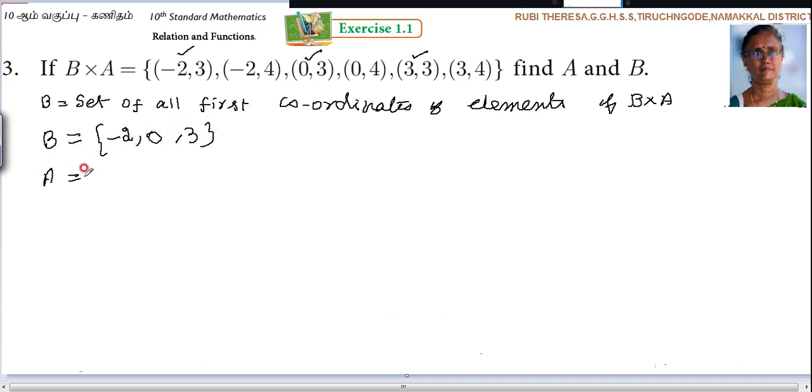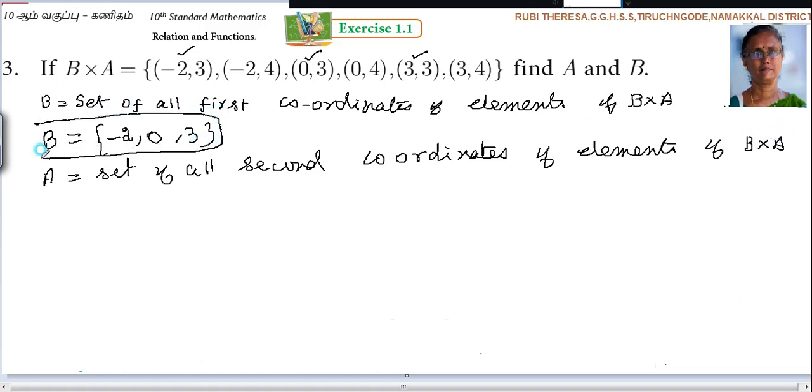Next, A is what? A is the set of all second coordinates. This is for understanding, for writing A. This is not necessary actually. They are asking for A and B. So you wrote B. For A you must write.